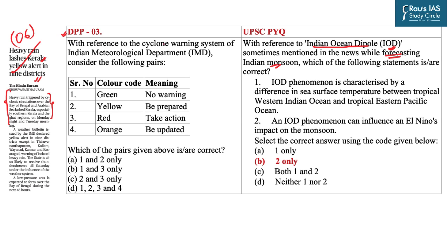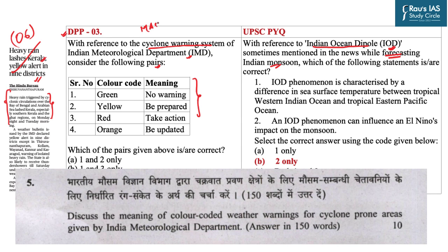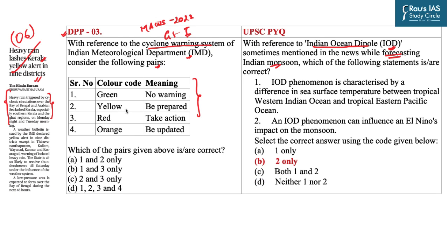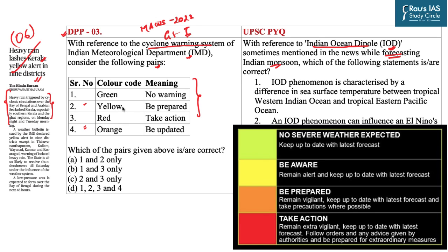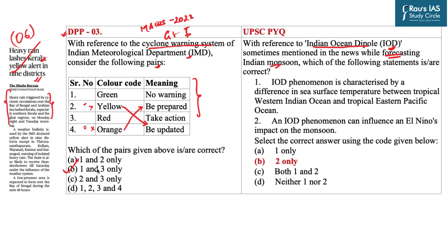Question three asks: with reference to the cyclone warning system of the Indian Meteorological Department, consider the following pairs — find the correctly matched pair. This theme has also been asked in mains this year in GS Paper 1. In this question, options 2 and 4 are interchanged: yellow actually stands for 'be updated' and orange for 'be prepared.' So options 2 and 4 are incorrectly matched, making option B — pairs 1 and 3 — the correct answer.